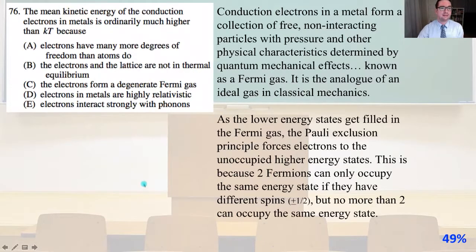76, the mean kinetic energy of the conduction electrons in metals is ordinarily much higher than KT because conduction electrons in a metal form a collection of free non-interacting particles with pressure and other physical characteristics determined by quantum mechanical effects, known as a Fermi gas. It is the analog of an ideal gas in classical mechanics. As the lower energy states get filled in the Fermi gas, the Pauli exclusion principle forces electrons to the unoccupied higher energy states. This is because two fermions can only occupy the same energy state if they have different spins, plus and minus one half, for example. But no more than two can occupy the same energy state. So that is going to be answer C.